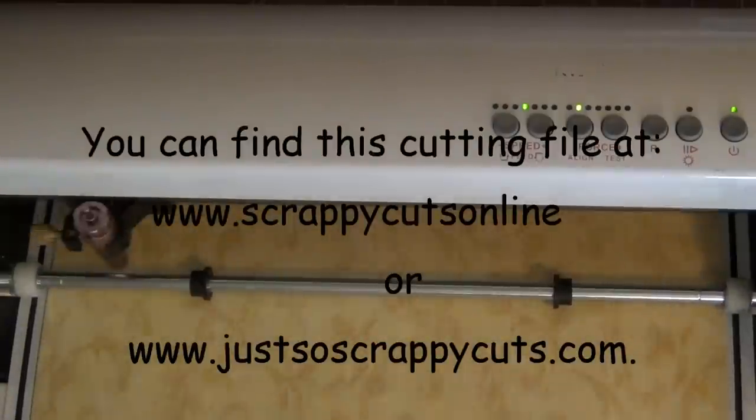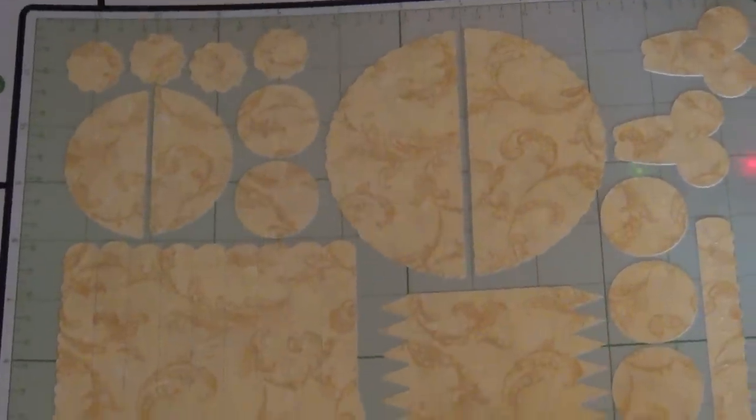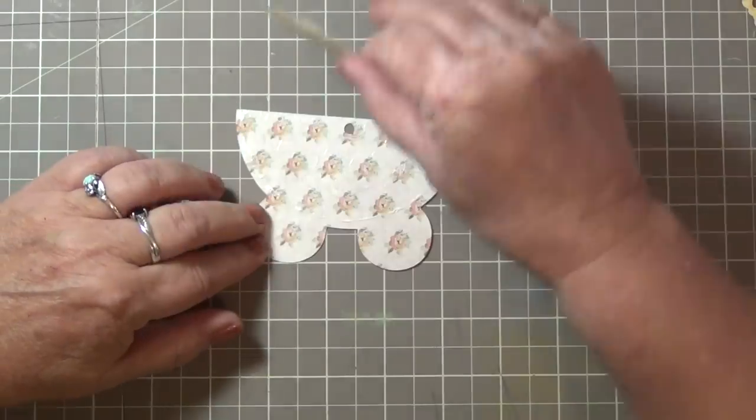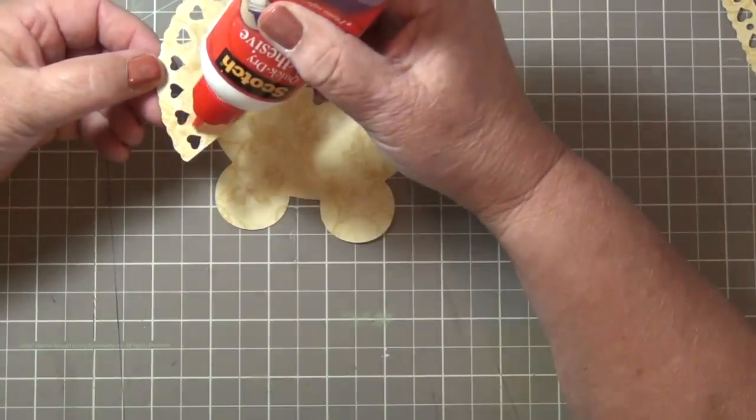I used my Gazelle by BossCut to cut out all of the pieces. In this particular baby carriage I used K&C cardstock watercolor bouquet. I like using double sided double printed cardstock because